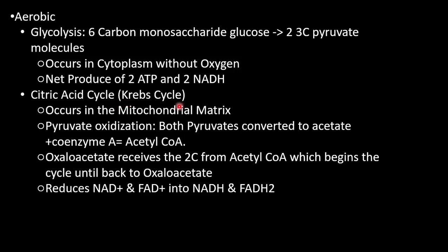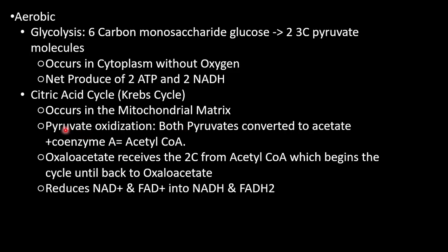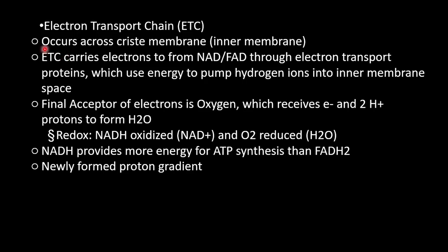The citric acid cycle, also known as the Krebs cycle, occurs in the mitochondrial matrix. The Krebs cycle is for respiration; the Calvin cycle is for photosynthesis. Pyruvate oxidation converts both pyruvates into acetate plus coenzyme A, forming acetyl-CoA. Oxaloacetate then receives the two-carbon acetyl group from acetyl-CoA, beginning the cycle and regenerating back to oxaloacetate, reducing NAD+ and FAD+ into NADH and FADH2.